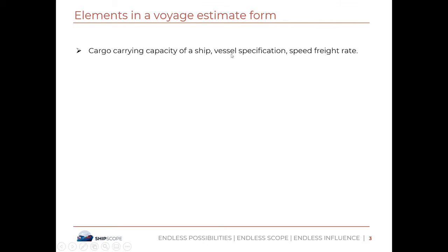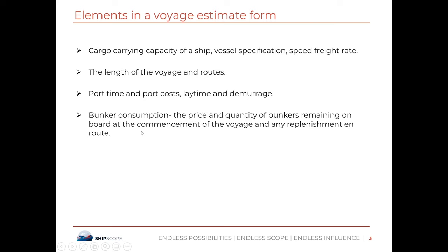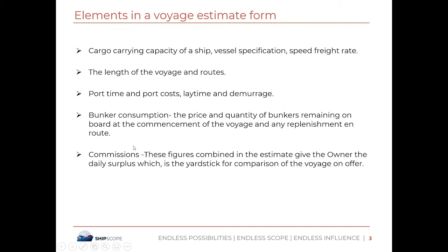The elements are: cargo carrying capacity of a ship, vessel specification, speed, freight rate, the length of the voyage and route, port time and port cost, laytime and demurrage, bunker consumption, the price and quantity of bunkers remaining on board at the commencement of the voyage and any replenishment en route, and commission. These figures combined in the estimate give the owner the daily surplus, which is the yardstick for comparison of the voyage on offer.